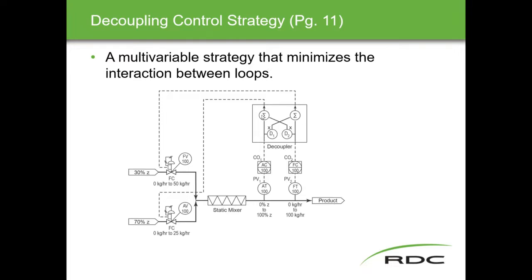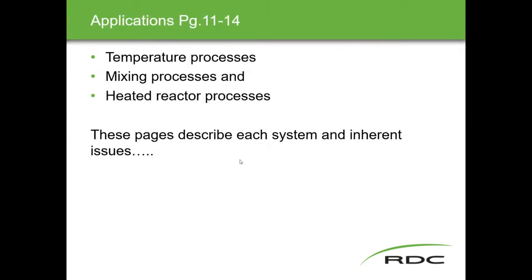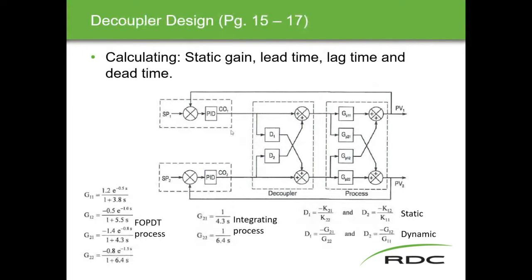The RGM leads us into the decoupling control strategy. Knowing the interaction between the two loops — one affects the other by a factor of three, the other by 1.49 — we can calculate values to put in the decoupler to minimize the effect of one change on the other loop. Common applications for decoupling include temperature processes, mixing processes, and reactive processes. You can read about them on pages 11 to 14 of the ILM.